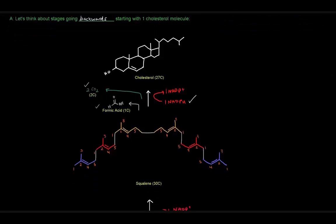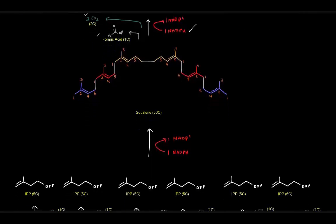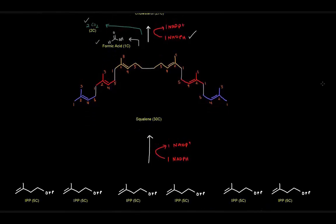So how did we get the squalene? The squalene came from the condensation of six IPP molecules, each of them, of course, being five carbons. Now, two of them were converted to DMAPP in order to actually have the reactions occur, but the DMAPPs came from IPPs. So it's not unfair to say that six IPPs were just kind of put together to make squalene, and that, of course, required an NADPH.